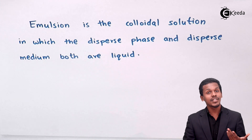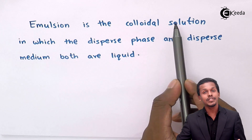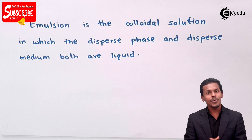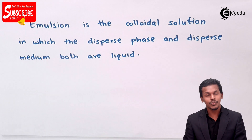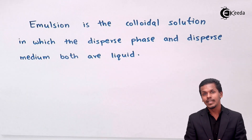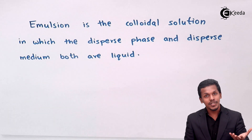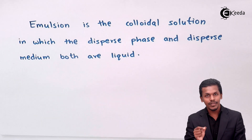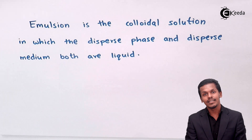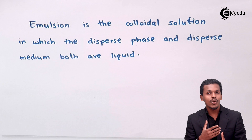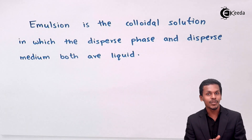The emulsion is a colloidal solution in which the dispersed phase and the dispersed medium both are in liquid form. In the classification of colloids, a solid can be dispersed in solid, liquid, or gas. But emulsion is specifically an example where a liquid dispersed phase is dispersed in a medium which is also liquid. This kind of colloidal solution is known as emulsion.